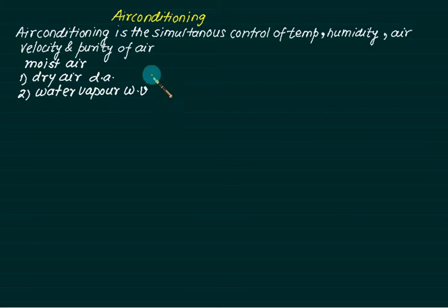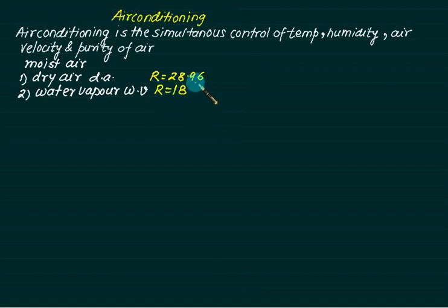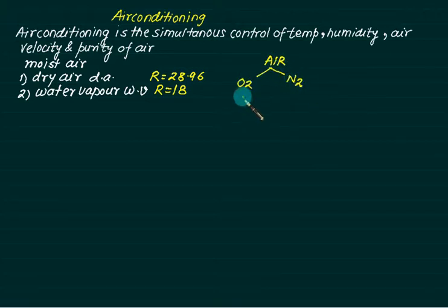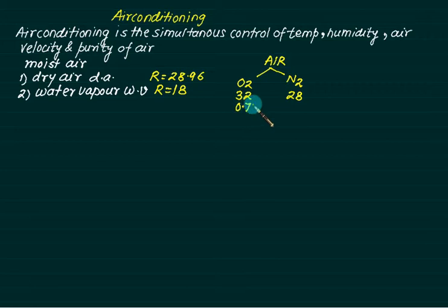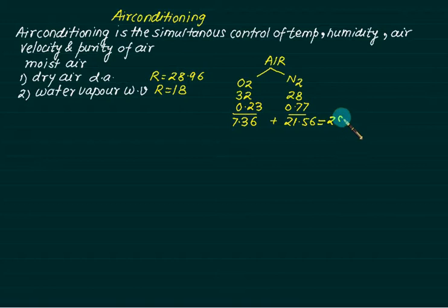The molecular mass of dry air is approximately 28.96, and the molecular mass of water vapor is around 18. Air consists of two constituents — oxygen and nitrogen. Oxygen has molecular mass 32, nitrogen is 14×2 = 28. On a mass basis, oxygen is approximately 23% and nitrogen is 77%. Multiplying and adding gives approximately 28.92, and the corrected value is 28.96 (correction ≈ 0.04 due to other gases).